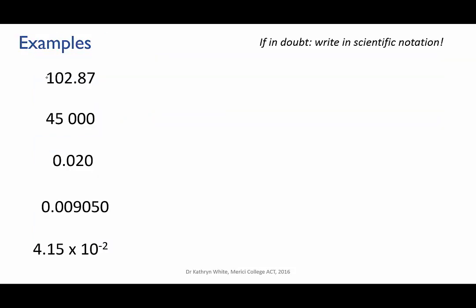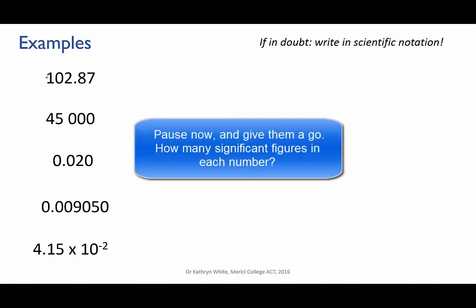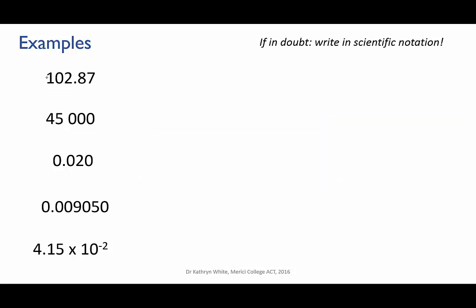Let's do some examples. Pause the video and try these for yourself. How many sig figs are in each of these numbers? Okay. 102.87. This starts with a non-zero digit, the 1, and goes on from there. The only zero in it is a captive zero, which we know is significant. So this number has one, two, three, four, five sig figs.